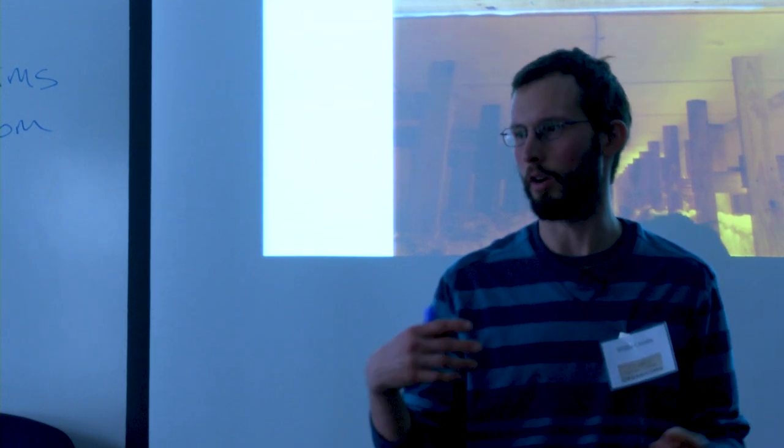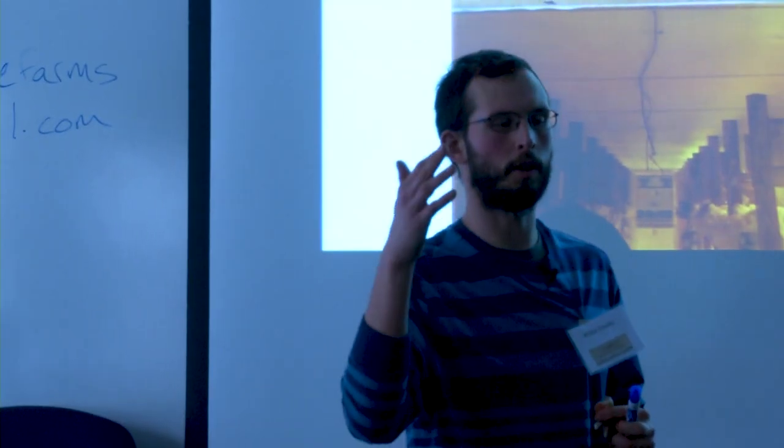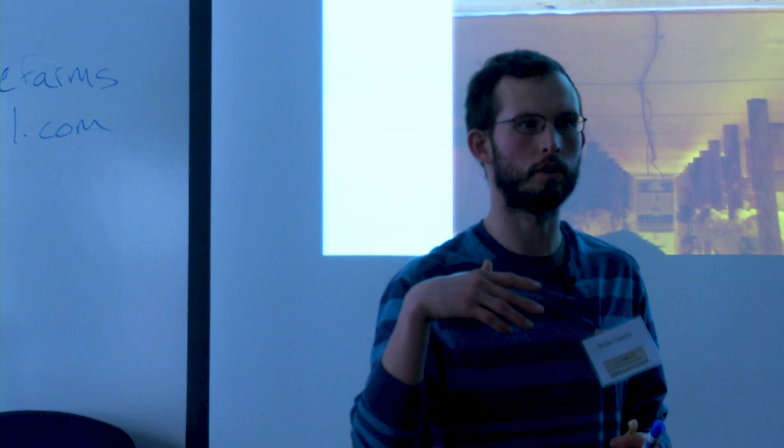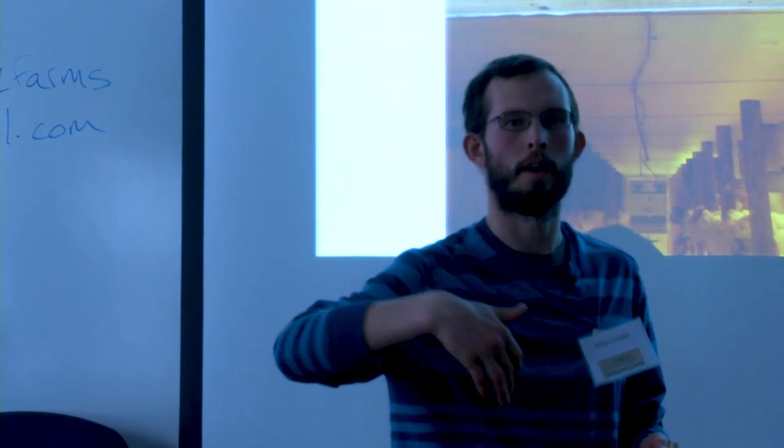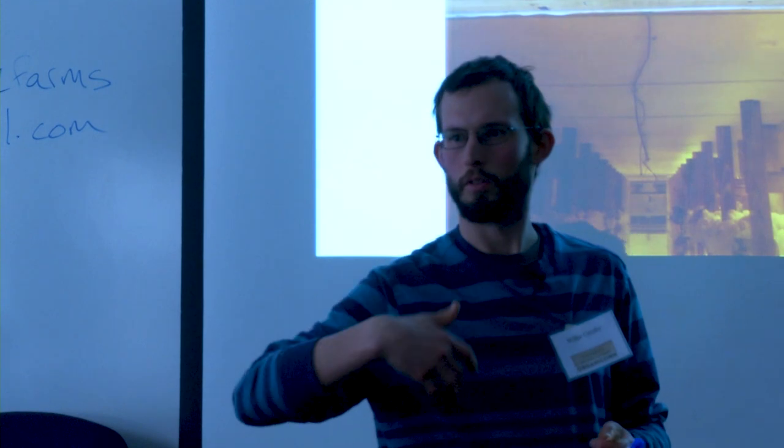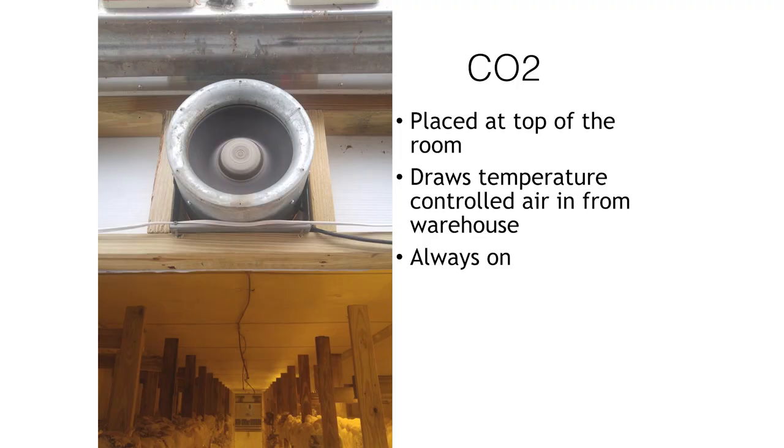CO2 - ideally we want parts per million below 800 CO2. So what does that mean? Generally changing out all the air in the room every eight to ten minutes, so just exchanging the air out. That could look like having one fan blowing air in, or maybe two fans - one blowing in, one blowing out, an intake and an exhaust.